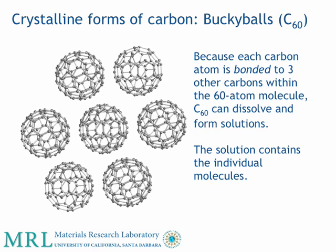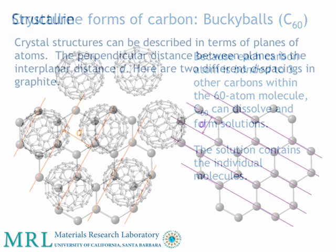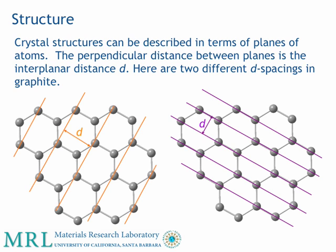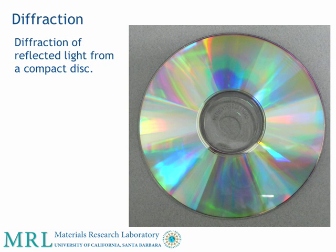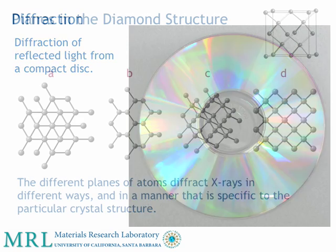But how do we know that the carbon atoms in buckyballs connect and form a spherical shape? Crystal structures can be described in terms of planes of atoms. The perpendicular distance between planes is the interplanar distance, D. Here are two different D spacings in graphite. These distances can be studied using X-ray diffraction — the same X-rays used to take pictures of the bones of our bodies. The effects of diffraction can be seen in everyday life. For example, the closely spaced tracks on a CD or DVD form the familiar rainbow pattern we see when looking at a disk.